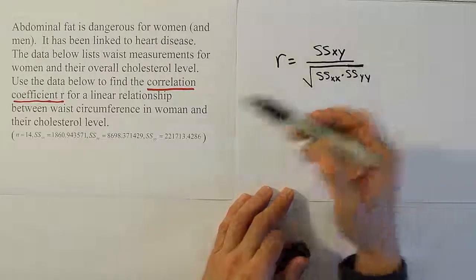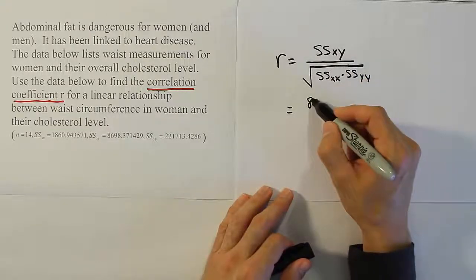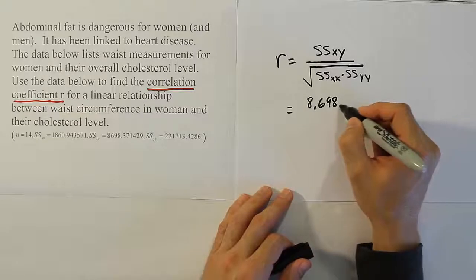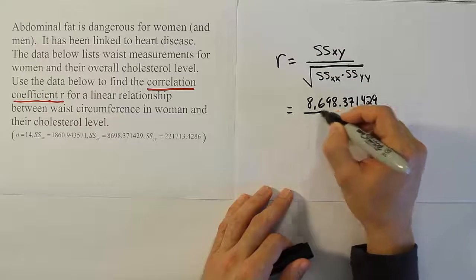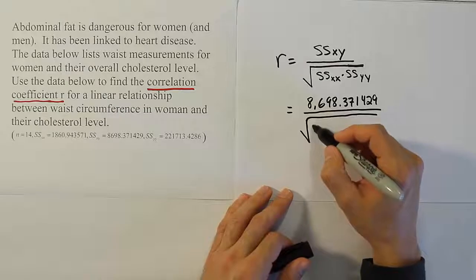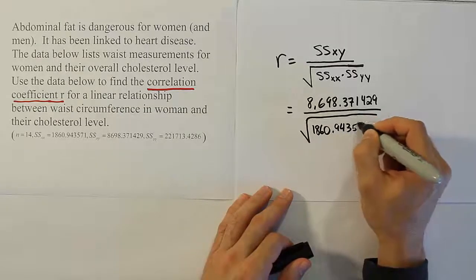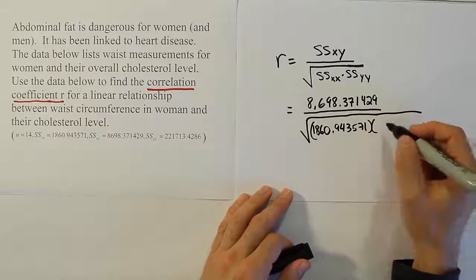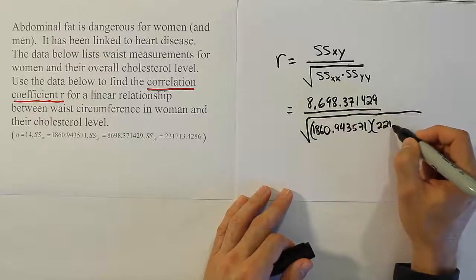Since we have these summary values calculated for us, it's just a simple matter of plugging that information in. So we have 8,698.371429 divided by the square root of SSXX, which is 1860.943571, times SSYY, which is 221,000.